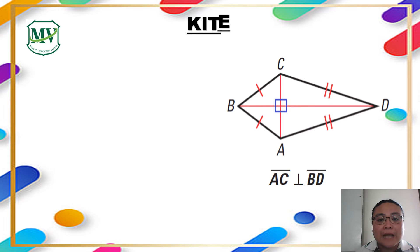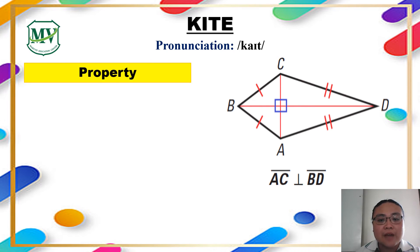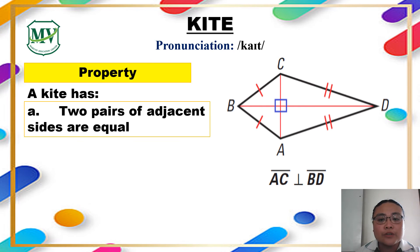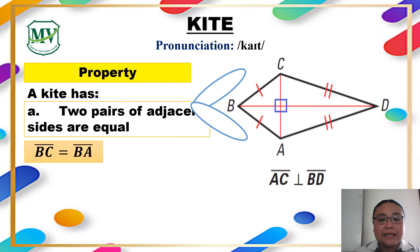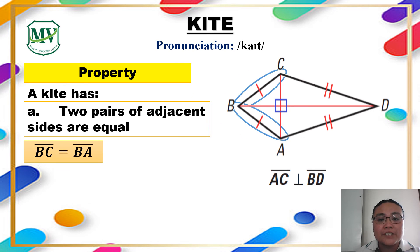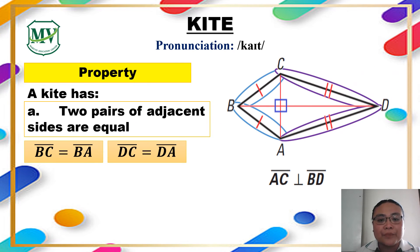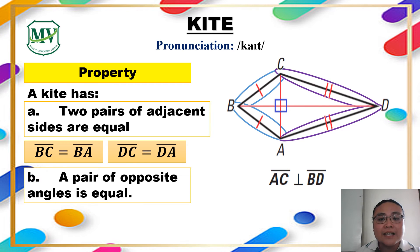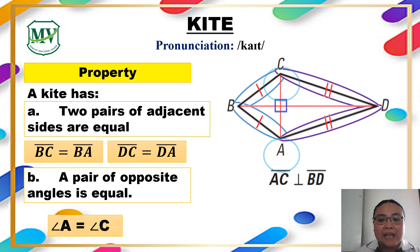The last type of quadrilateral is kite. What are the properties of a kite? Unlike all other quadrilaterals which have parallel sides, a kite doesn't have parallel sides. Instead, a kite has two pairs of adjacent sides which are equal in length. When we say adjacent, these are sides that share the same vertex. Another characteristic of a kite is that it has a pair of opposite angles that are equal in measurement. Angle A is equal to angle C.